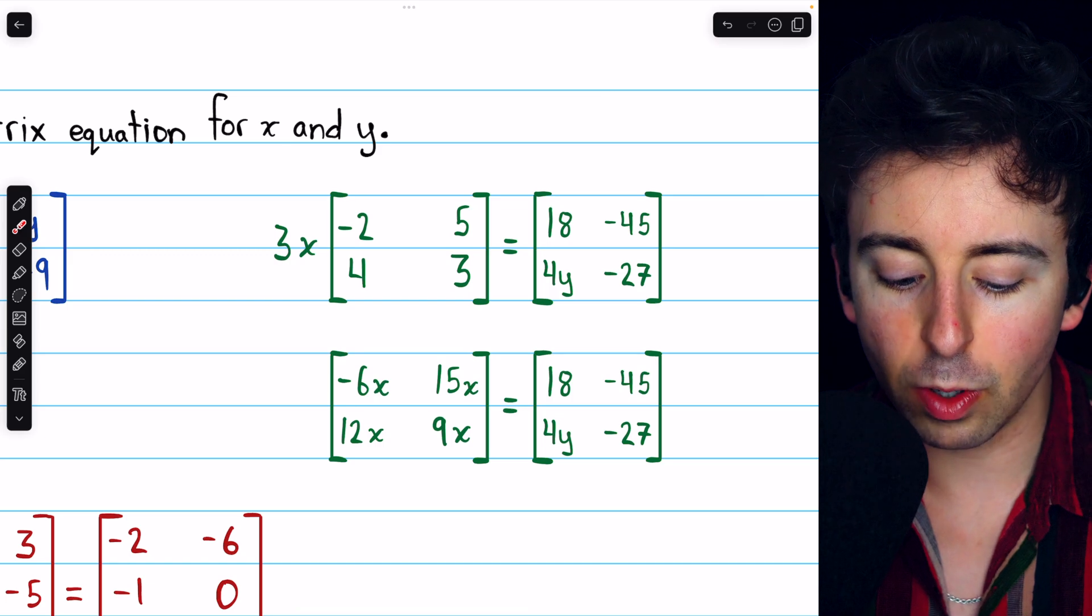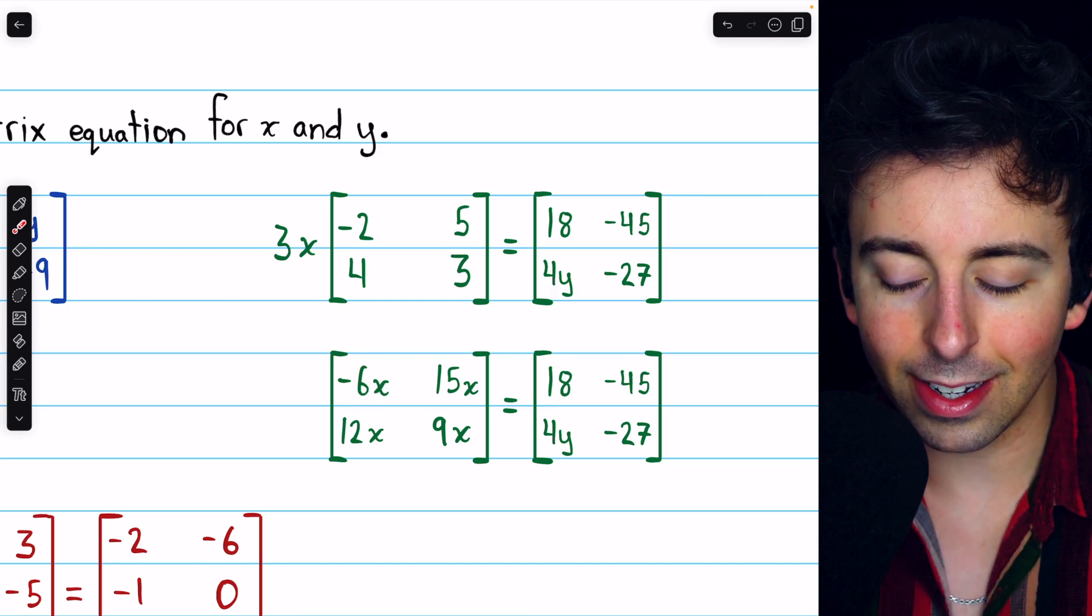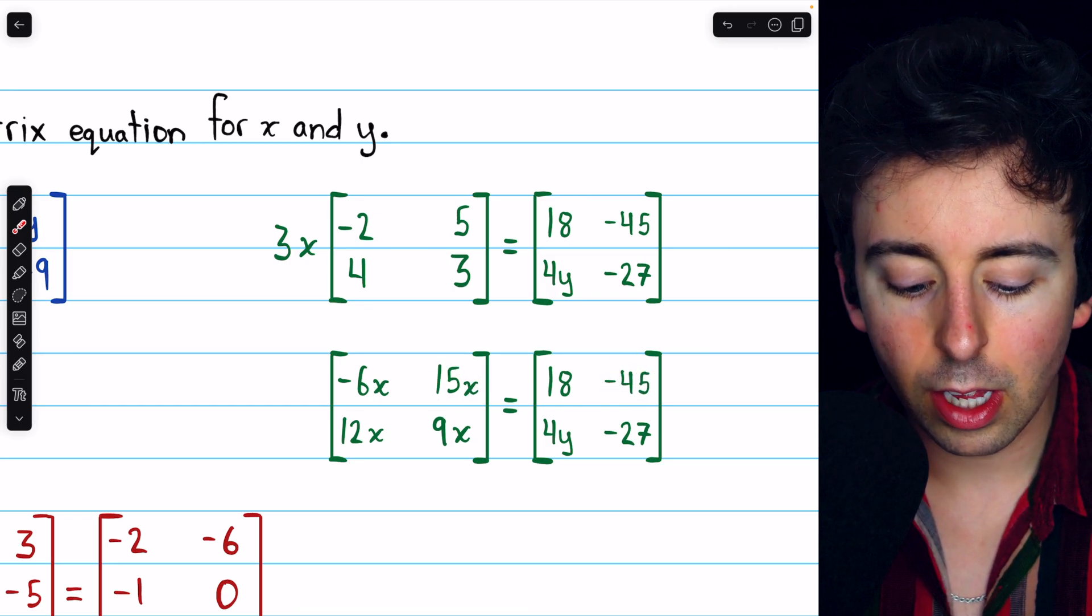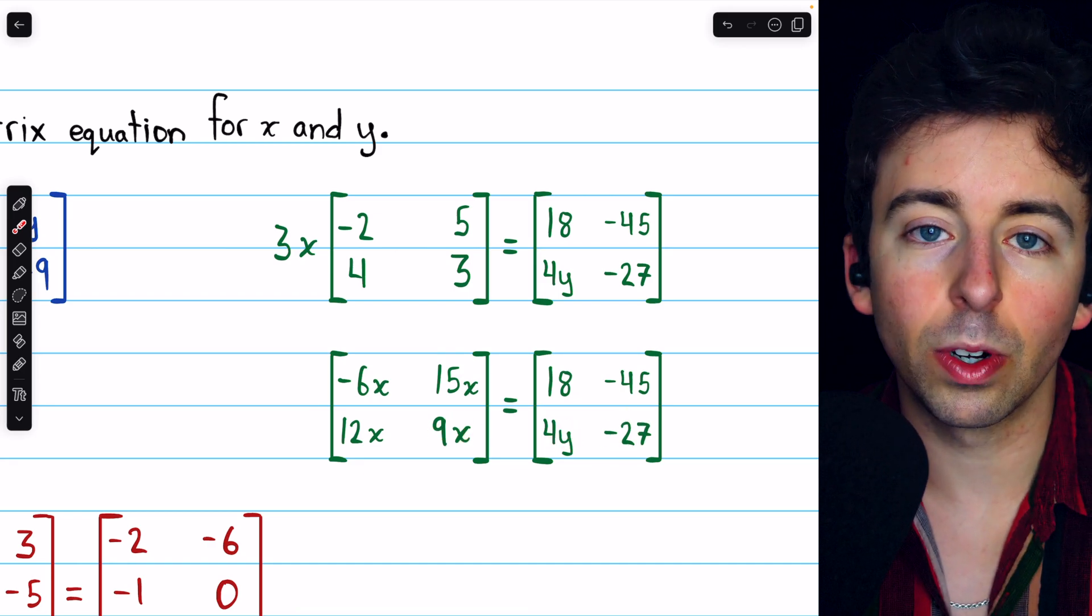Now, corresponding entries must be equal. For example, negative 6x must equal 18. 15x must equal negative 45. 12x must equal 4y. And 9x must equal negative 27.